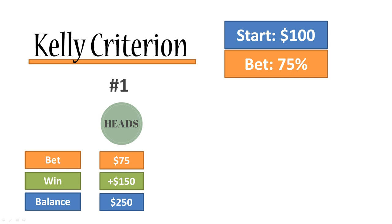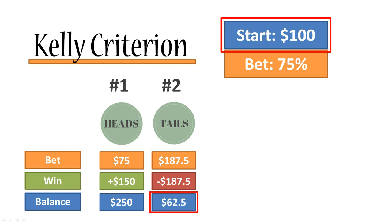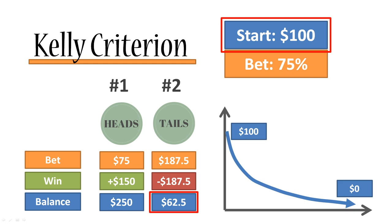Just after the first coin toss. Now we're going to bet on the second coin toss. We're betting $187.50, because that's 75% of $250. This time it's tails, and we lose $187.50. Our account balance is now $62.50. Just after two coin tosses, our starting balance of $100 has turned into $62.50. Because in the long run heads and tails come up with approximately the same frequency, our balance will go from $100 down to $0 — we're going to lose all of our money in the long run.